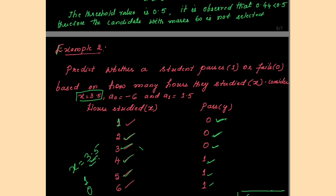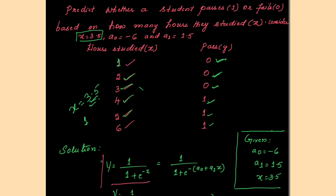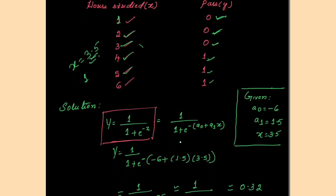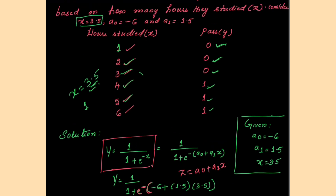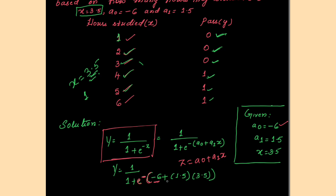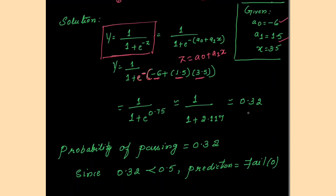Pass is 1 and fail is 0. Using y = 1 / (1 + e^(−z)) where z = a0 + a1*x: here a0 = −6, a1 = 1.5, and x = 3.5. Substituting: z = −6 + 1.5 × 3.5. When you simplify, you get y ≈ 0.32. Since 0.32 is less than the threshold of 0.5, the prediction is fail.